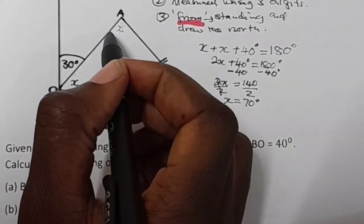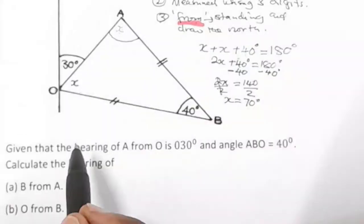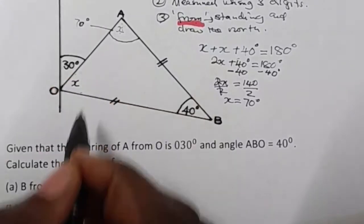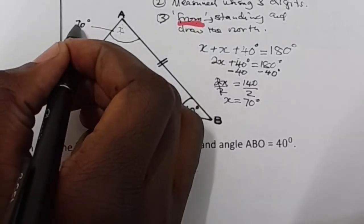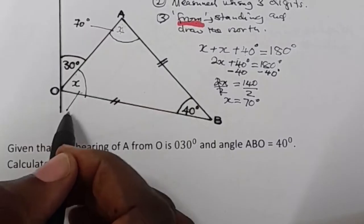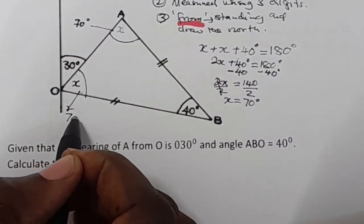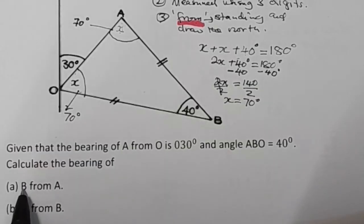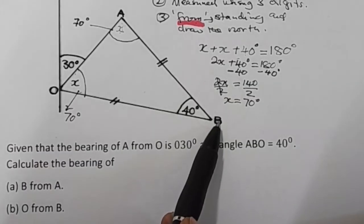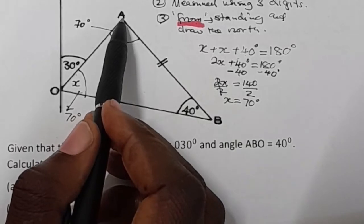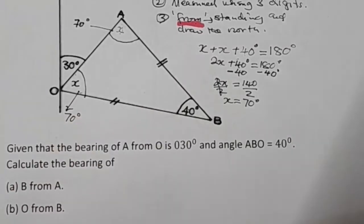So the entire angle here is 70 degrees, and the other base angle is also 70 degrees. With that in mind, we can now come to our question. We are finding the bearing of B from A — that is, the bearing of B whilst standing at A. Since we are standing at A, we are going to draw a north at A.